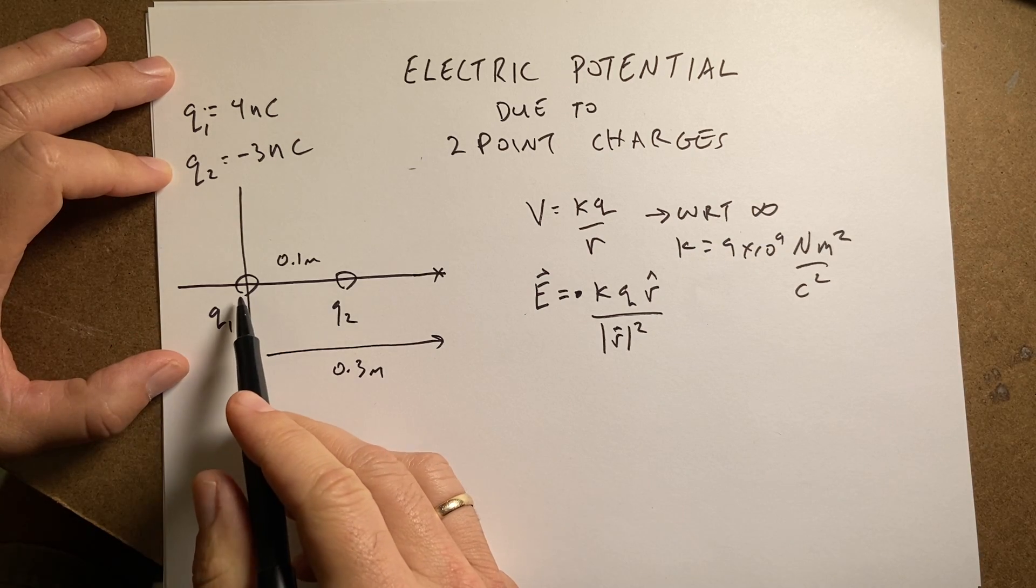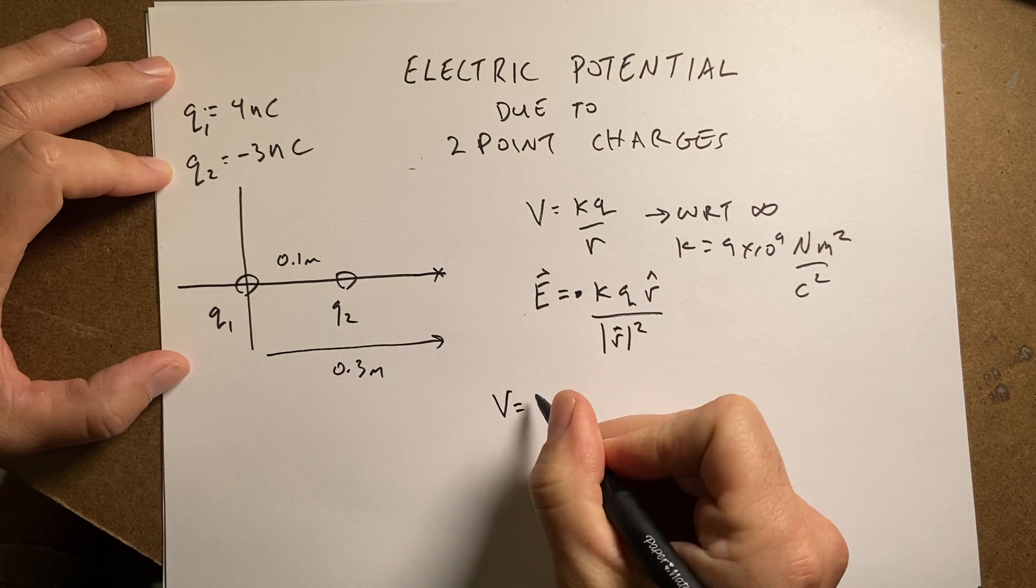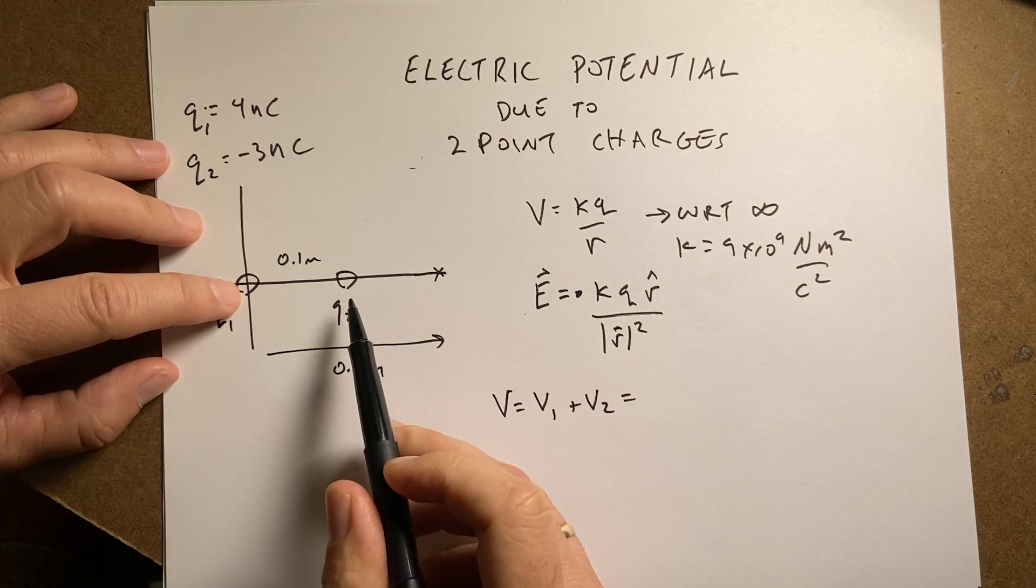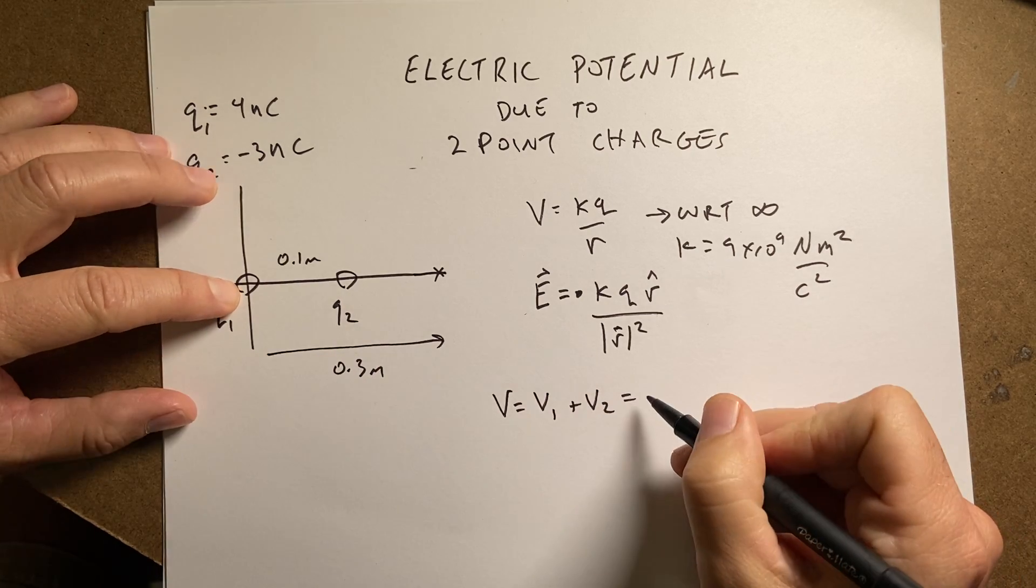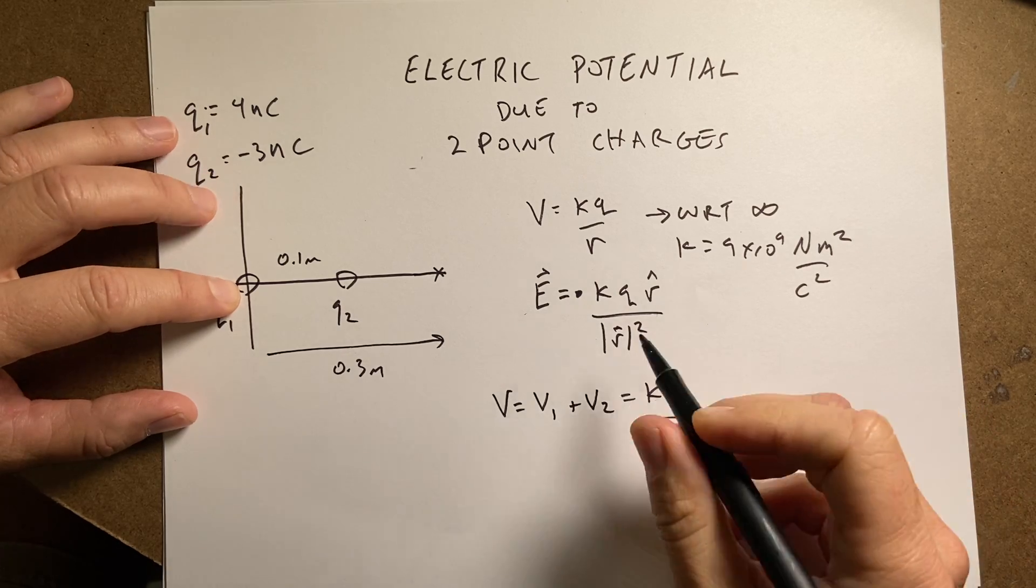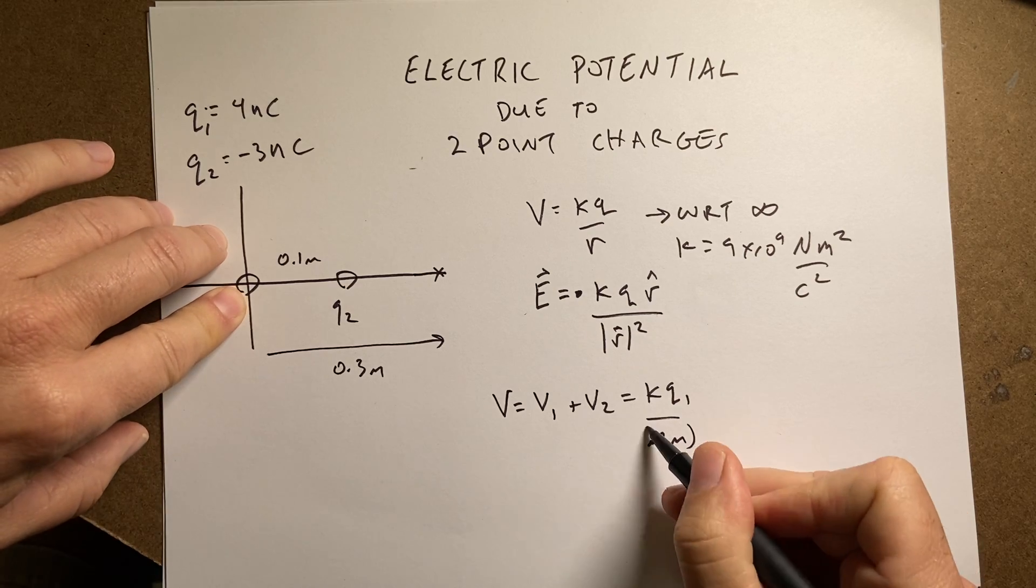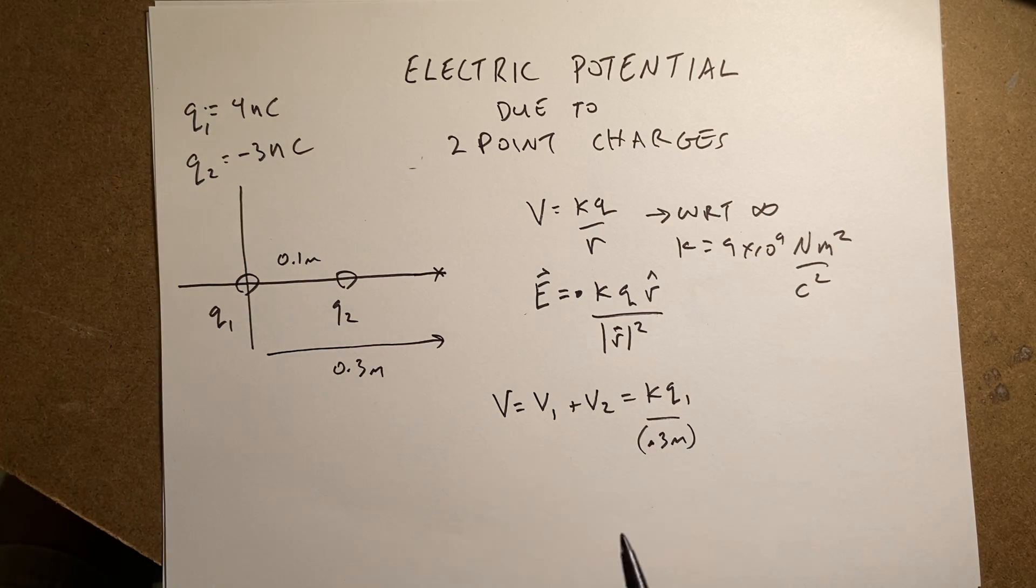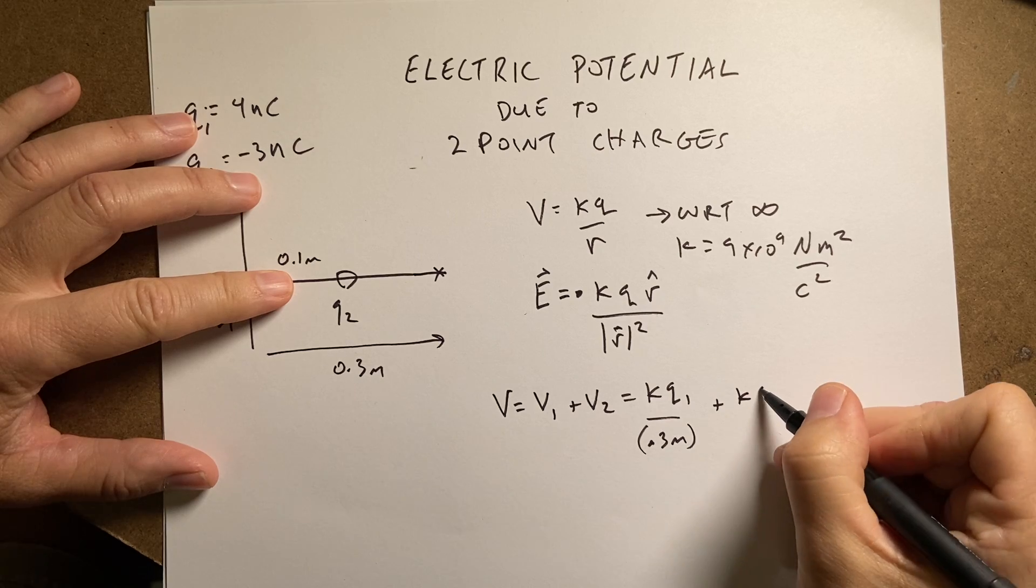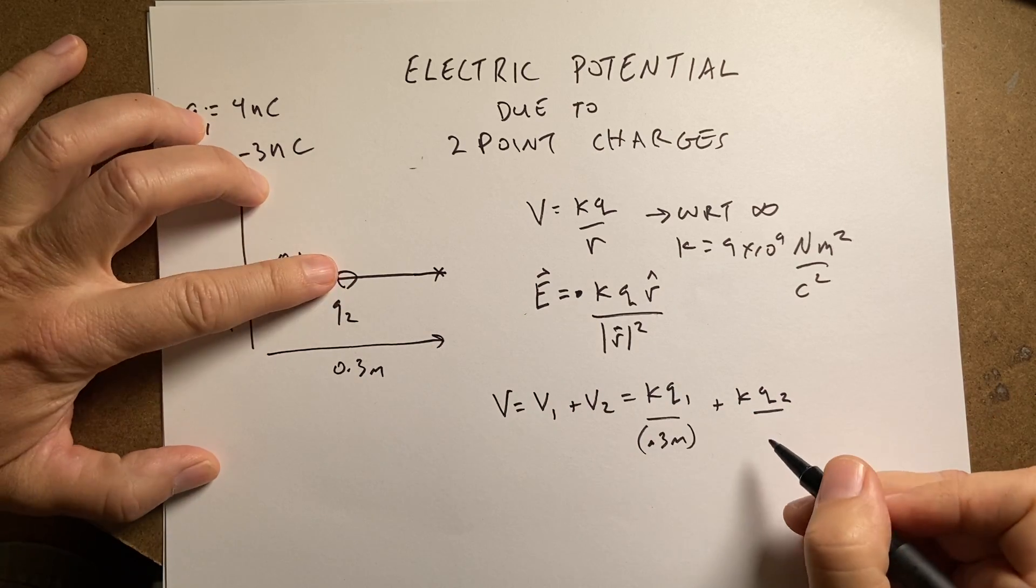Let's just find the potential at this point right here. It's just going to be V1 plus V2. So for one, it's going to be KQ1 over 0.3 meters. And this one's going to be plus KQ2 over this distance, which is just going to be 0.2 meters.